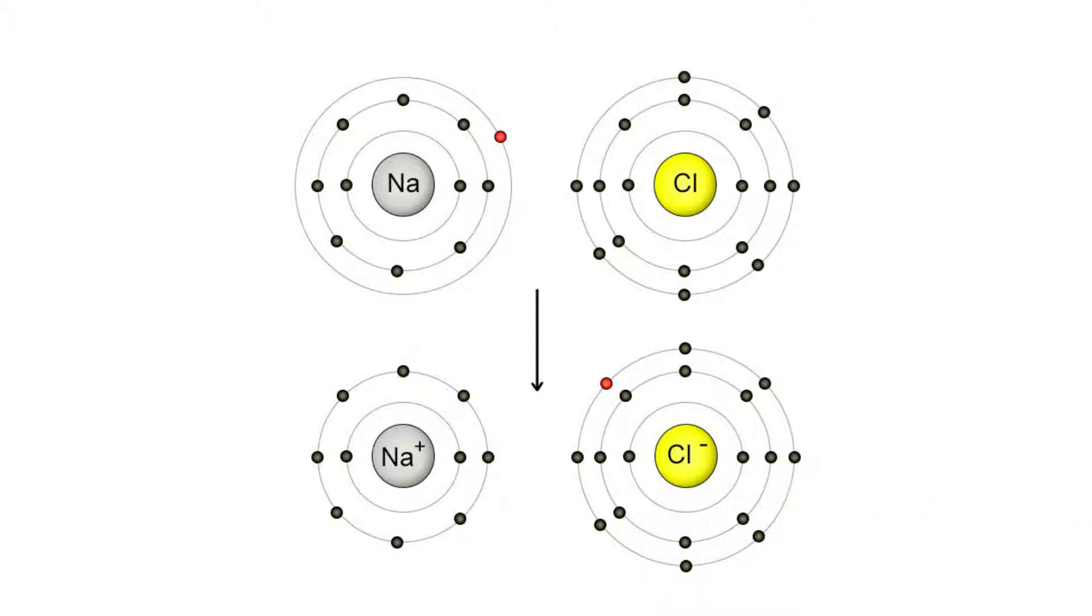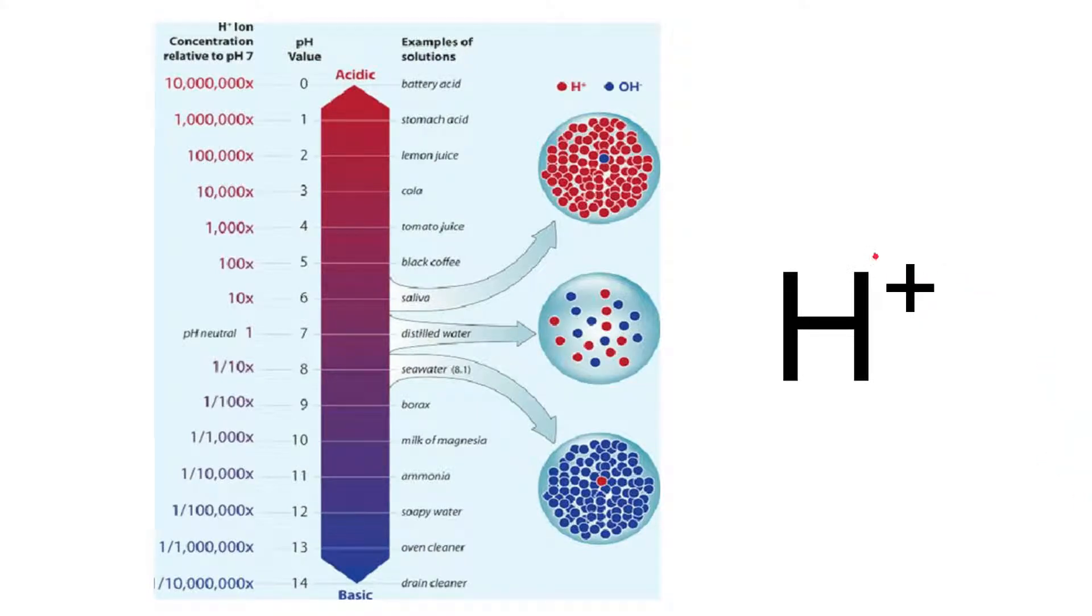Now ions crop up all over the place in your course, but in this short topic, you need to highlight four of those. So the first is hydrogen ions. This is an atom of hydrogen that has lost one electron.